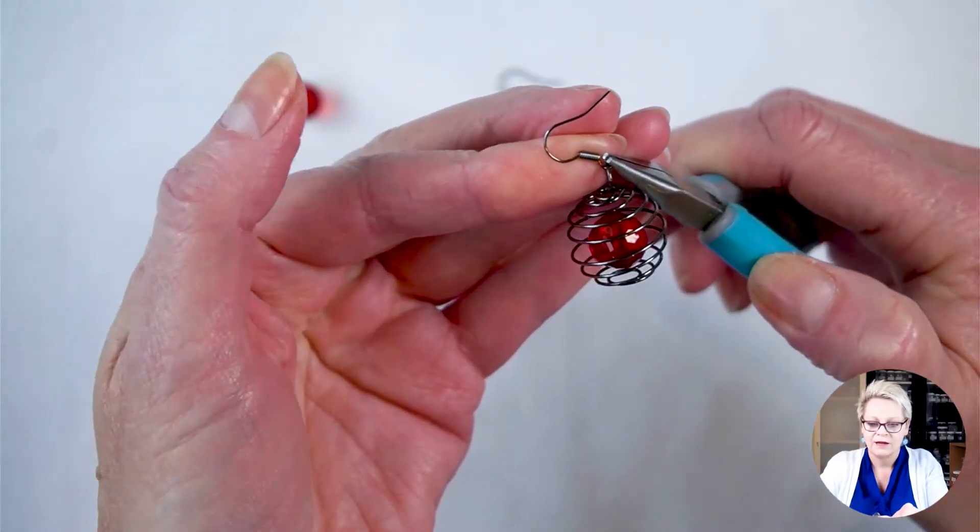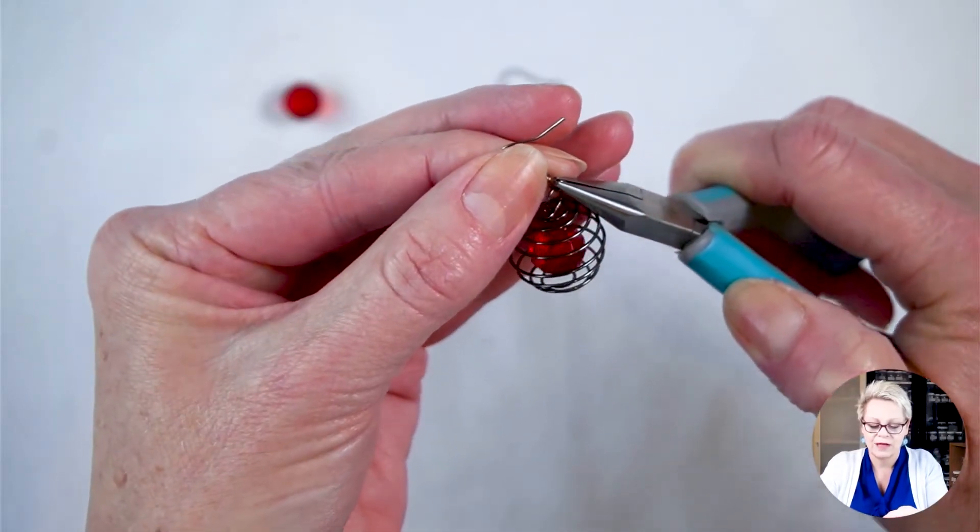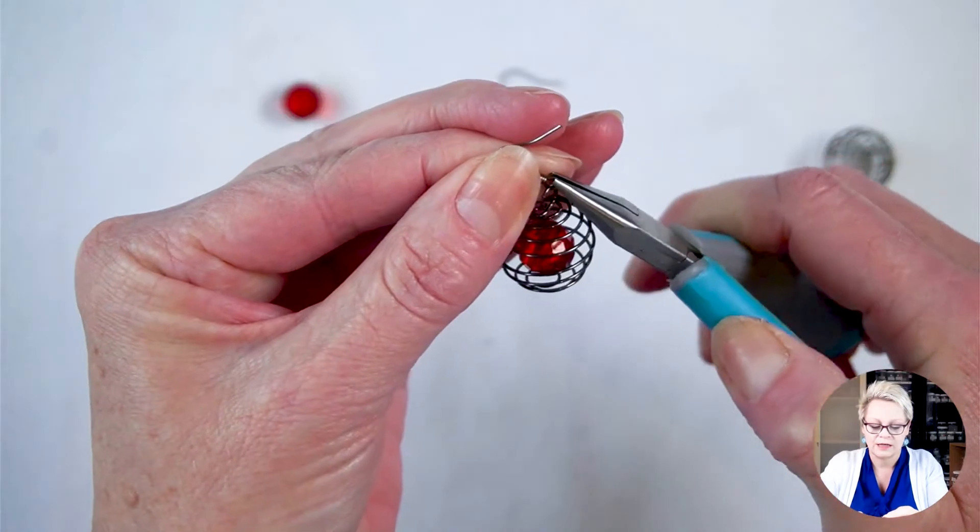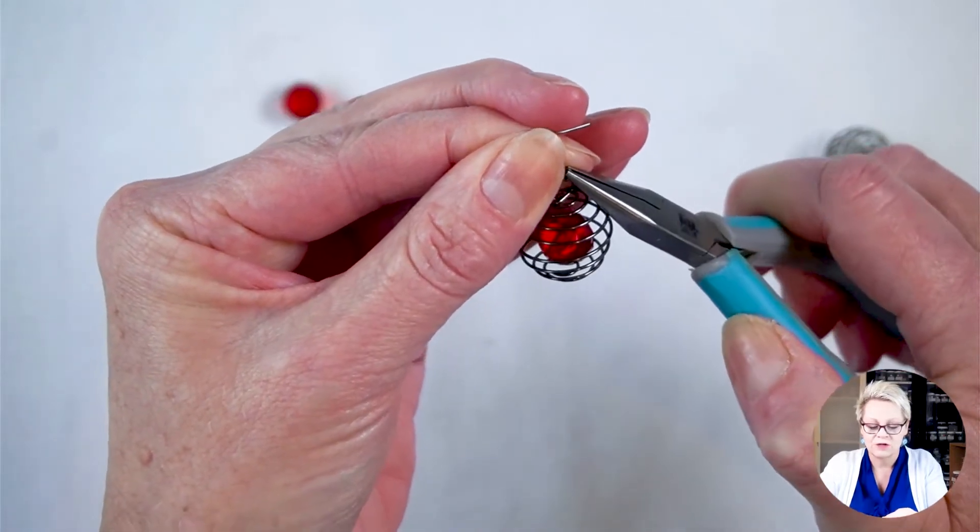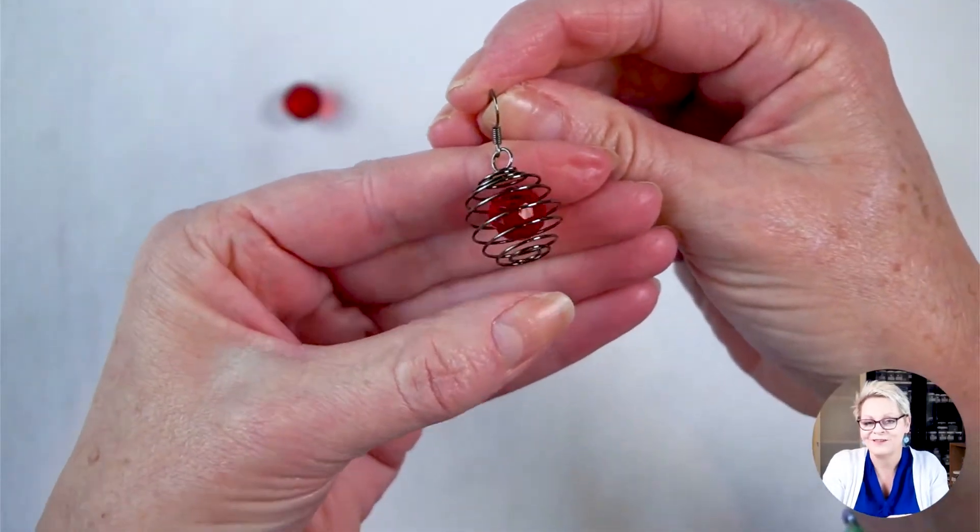So holding it on the side, the loop on the side, and holding the rest of it between my thumb and my forefinger, and just rotating it the other way. And just making sure that it's really well closed. So that didn't take long, did it?